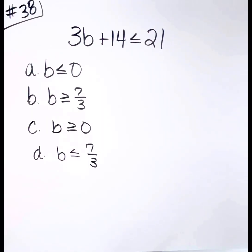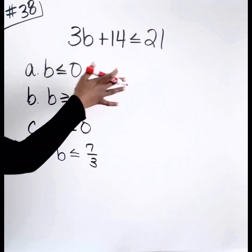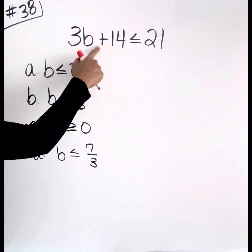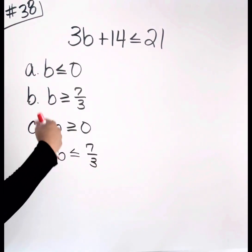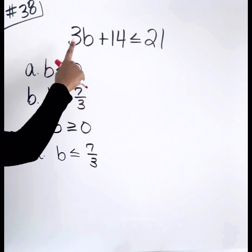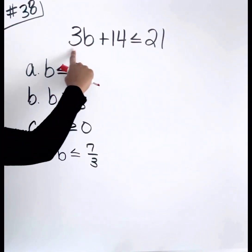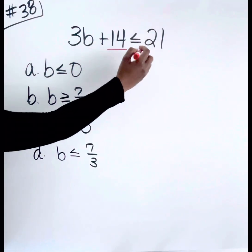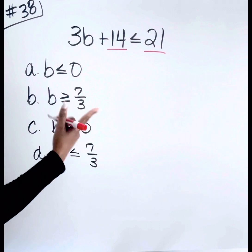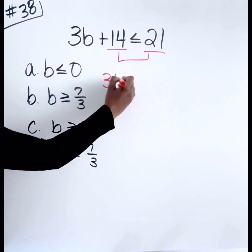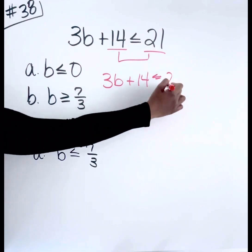Let's take a look at question number 38, which is an example of solving equations or inequalities in one variable. Anytime we're dealing with inequalities, in terms of how we solve, it's super similar to equations — only slight changes may have to be made in certain circumstances. We have 3B plus 14 is less than or equal to 21. Anytime we're solving for a value, whether we have an equation or inequality, the goal is to get the variable by itself by combining like terms. So we have 3B, 14, and 21.